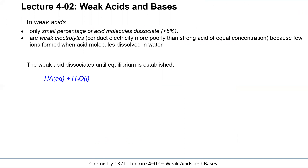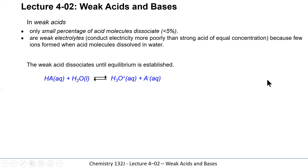We can look at the dissociation of a weak acid in an equilibrium expression. Note that weak acids are normally identified by a hydrogen atom at the front of the formula. Some of these molecules will donate that hydrogen to water. If we had 100 HA molecules, probably less than five would actually undergo this process — the remaining 95 would stay intact. That's why it's a weak acid.